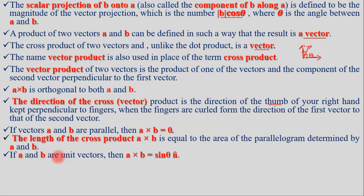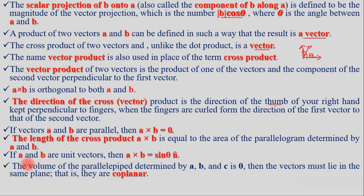If A and B are unit vectors, then the magnitude of A cross B follows accordingly. For a triple cross product, vectors must lie in the same plane. The result of A cross B cross B can be expressed in terms of components.